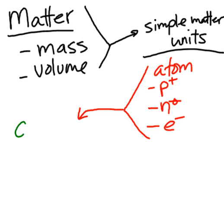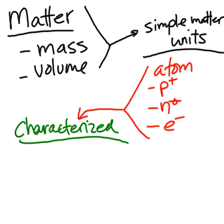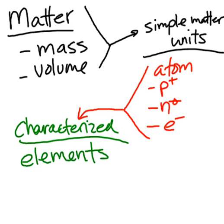All atoms — which consist of protons, neutrons, and electrons — can be characterized by a name. Those names are dependent on the number of protons each atom has. For example, an atom with three protons is lithium, five protons is boron, and 47 protons is silver. Those names — silver, lithium, boron — are the element names, which is how we classify the different types of atoms.